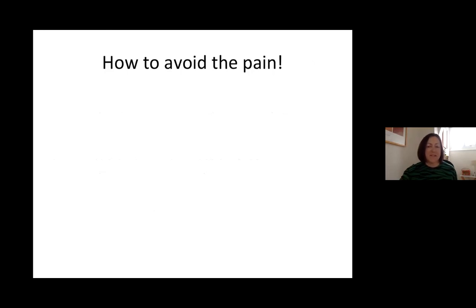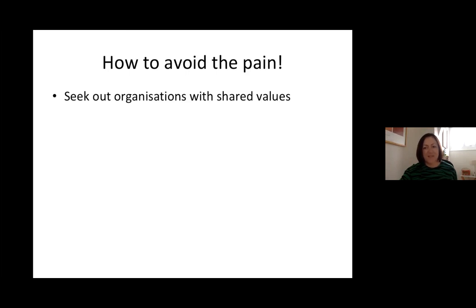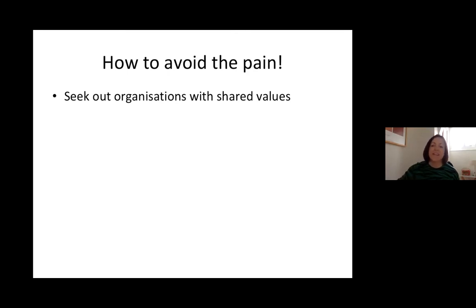That's a whistle-stop tour around what funders are looking for. But I want to add slightly to how to avoid the pain of collaboration, because it can be painful — and sometimes it's so easy to say, 'you know what, I'm just going to get the job done on my own.' So to avoid that pain: seek out organisations with shared values, people that you actually get on with. As Rachel said about Morrisons, it's not just about the organisation — it's about the people, it's about your contact there.